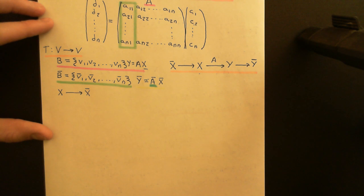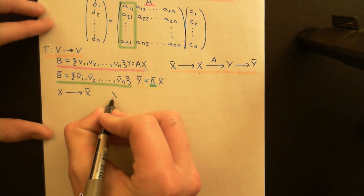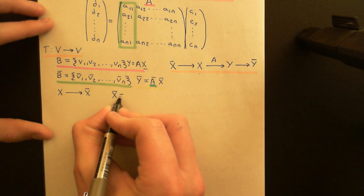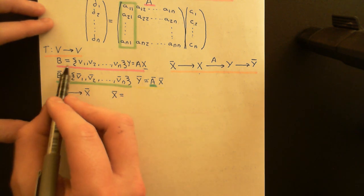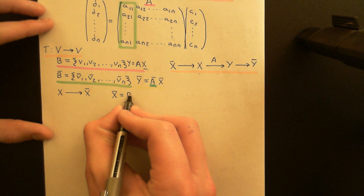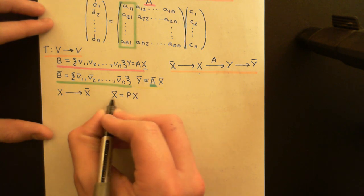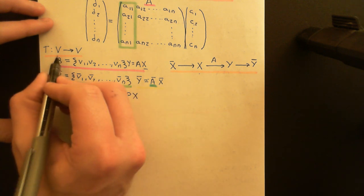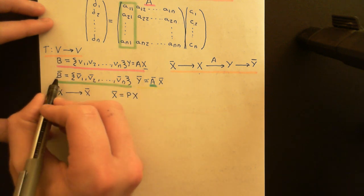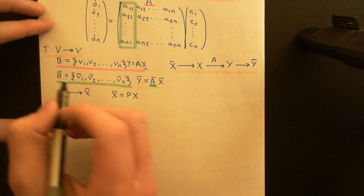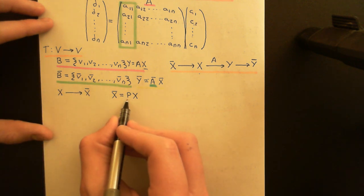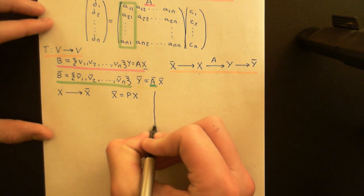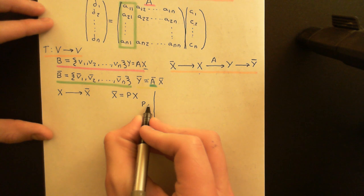If you're not familiar with this, please watch my earlier video in the playlist entitled 'Change of Basis.' The answer is that you can multiply the coordinate vector with respect to basis B by a matrix P, and that will turn it into the coordinate vector with respect to basis B-bar.